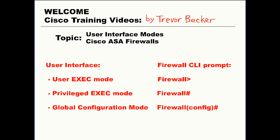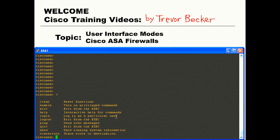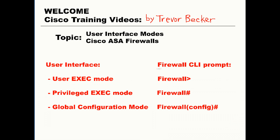In order to go up a level and get into privilege mode, you will need to issue the command enable and then provide your authentication password. Here's an SSH connection to a firewall. Currently we are in user exec mode. If I press the question mark, you can see all the available commands that you can issue.